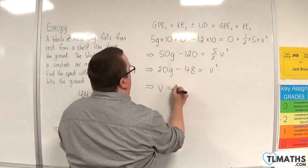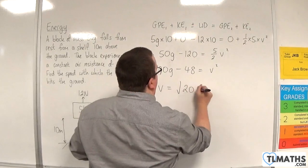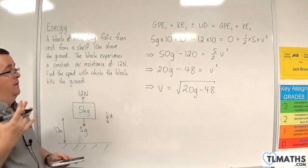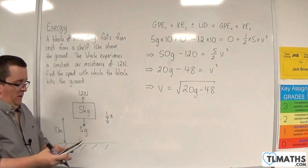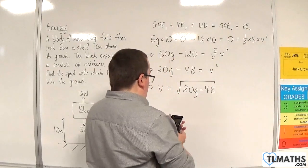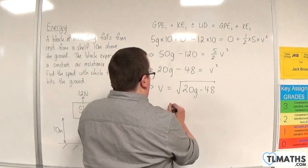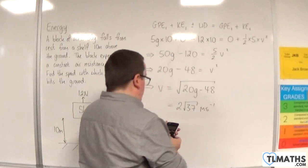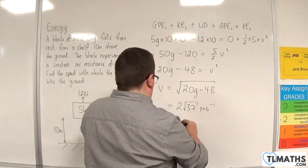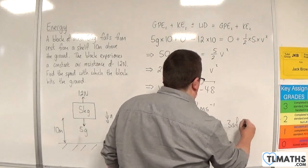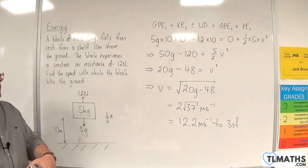So, V will be the square root of 20G take away 48. And if we plug in G as 9.8, we get 2 root 37 meters per second, which is 12.2 meters per second to 3 significant figures.